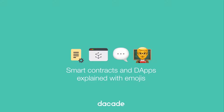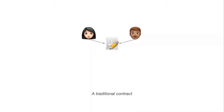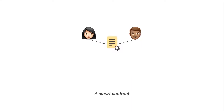Welcome! In this video series we are going to explain what smart contracts and DApps are. A contract is an agreement between multiple parties, enforced by law. A smart contract is a program that facilitates secure transactions without third parties.